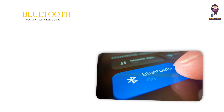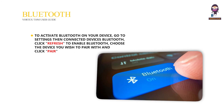Bluetooth. To activate Bluetooth on your device, go to Settings then Connected Devices then Bluetooth, click Refresh to enable Bluetooth, choose the device you wish to pair with, and click Pair.